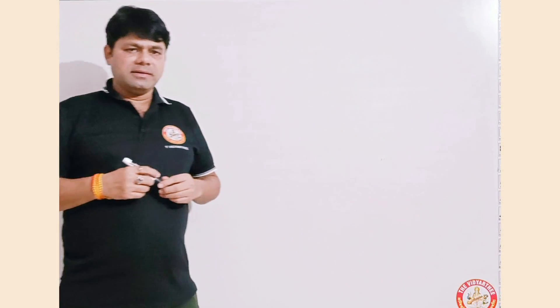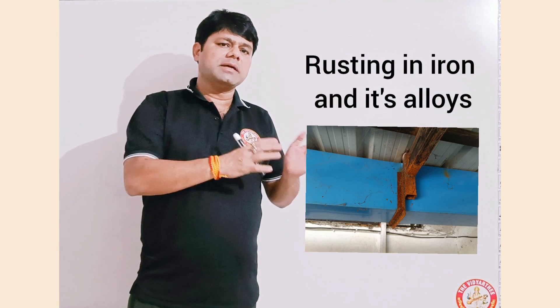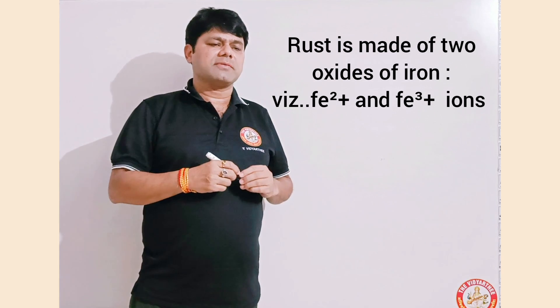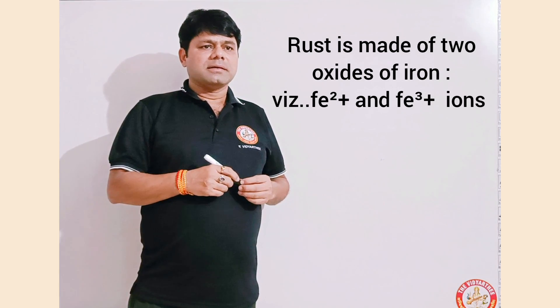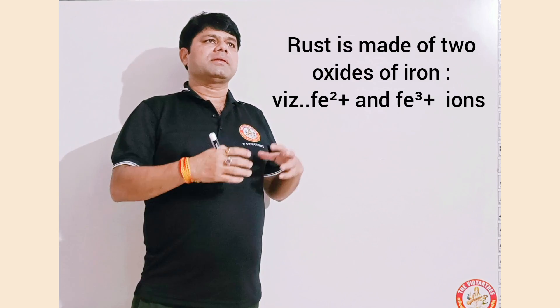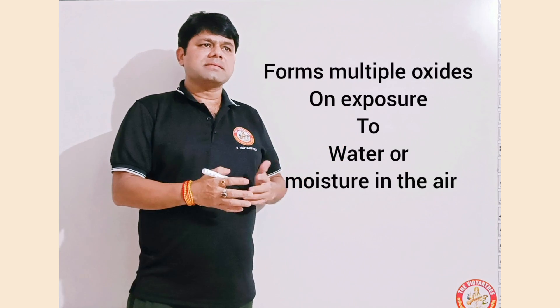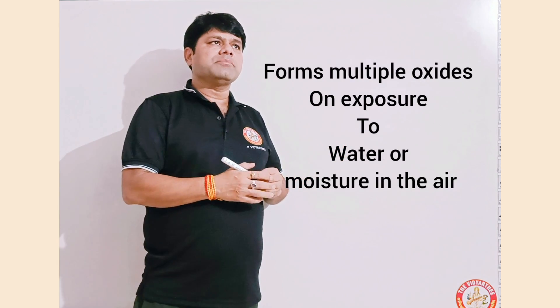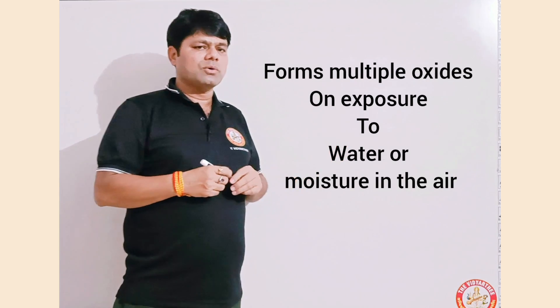We will get more specific with the topic of rusting of iron. In rusting, iron forms different types of oxides — it forms Fe²⁺ ions as well as Fe³⁺ ions, which react to form different types of oxides in the presence of water or the moisture present in the air.